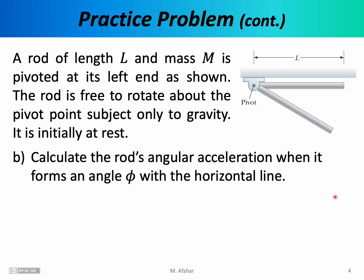Let's continue with the same practice problem. This time we want to calculate the rod's angular acceleration when it forms an angle φ with the horizontal. We have the same rod of length L and mass M, but we have allowed it to rotate — it is falling, but not freely. As it falls, it rotates around the pivot point. We focus on the instant when the rod has rotated through angle φ and ask whether the angular acceleration is the same as before, or whether it changes as the rod falls.